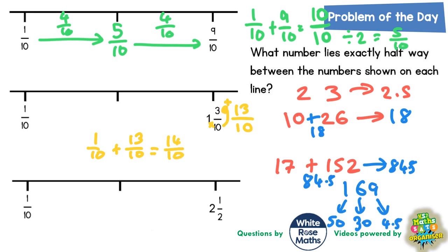And obviously half of 14 tenths, it's like saying half of 14 apples would be 7 apples, half of 14 oranges would be 7 oranges, half of 14 fire engines would be 7 fire engines. This is the unit that we're talking about. We're dealing with tenths, so half of 14 tenths would be 7 tenths. So 7 tenths must be in the middle.